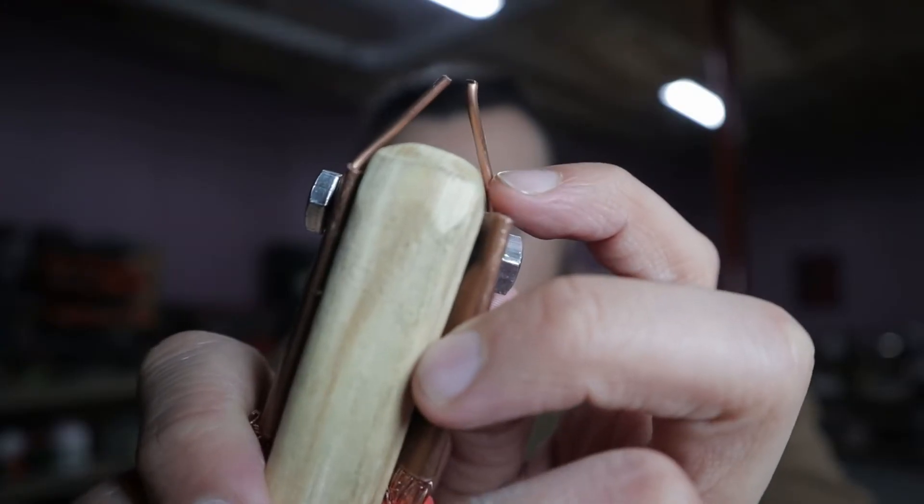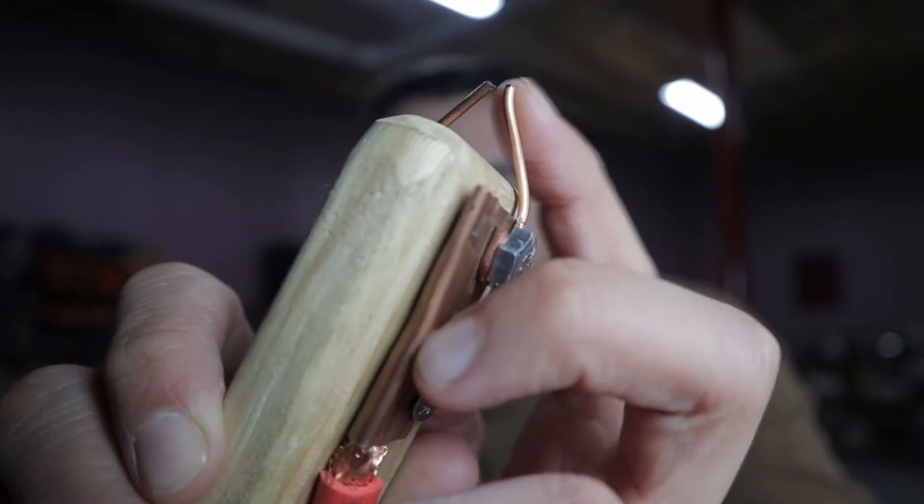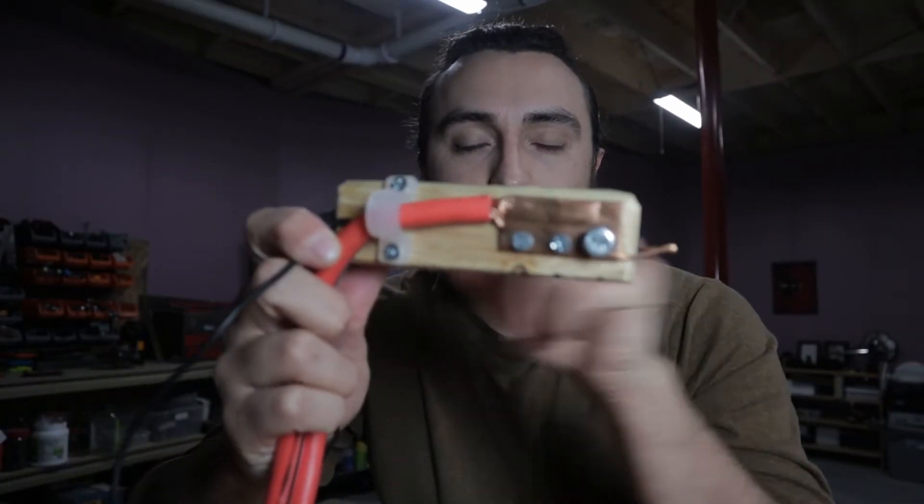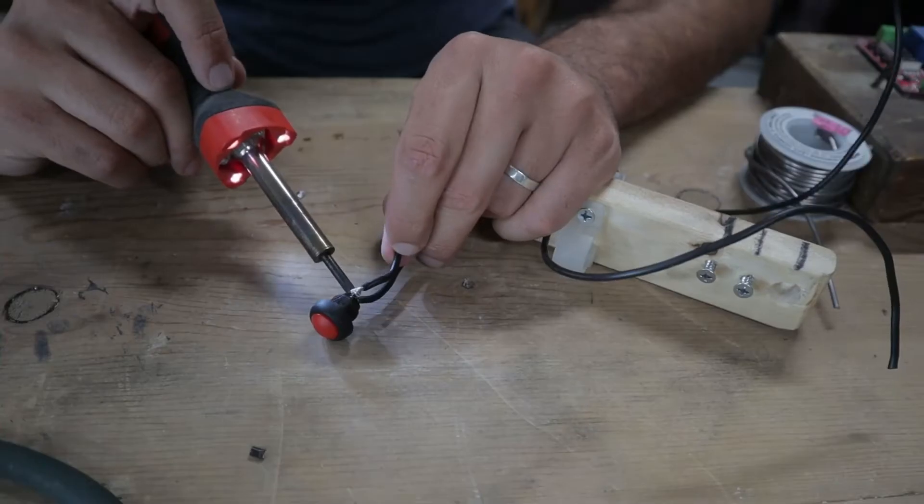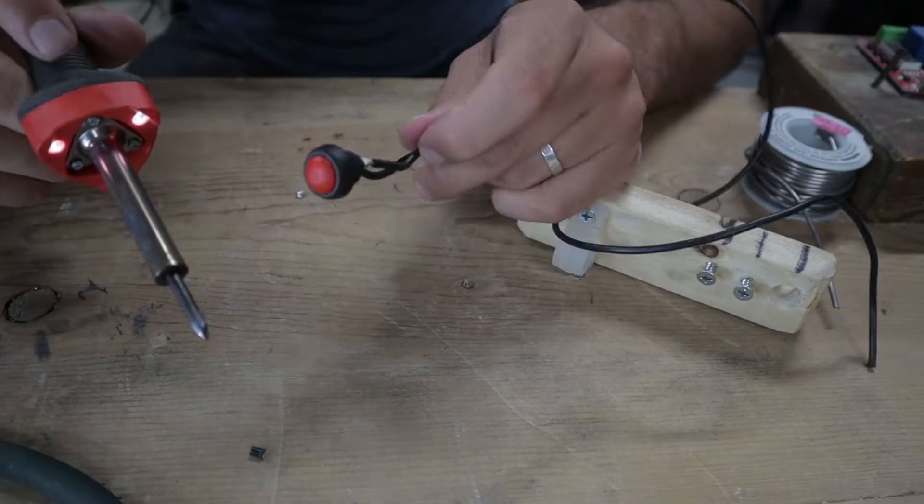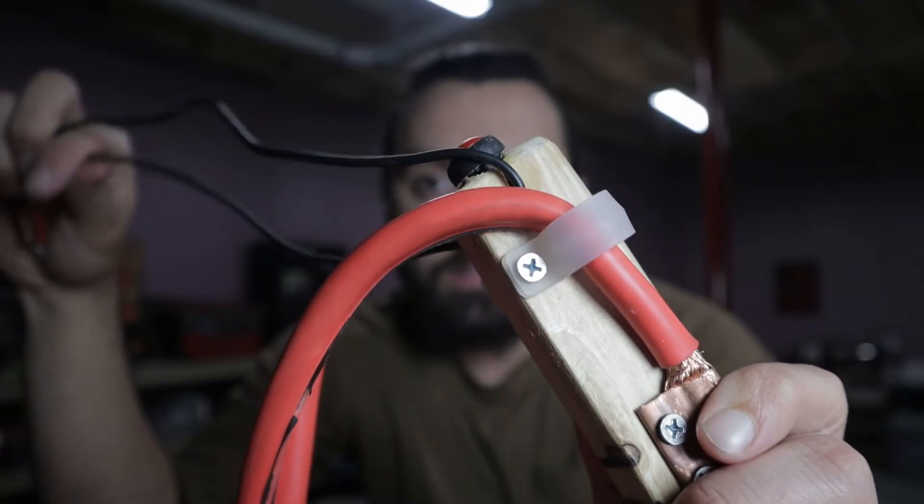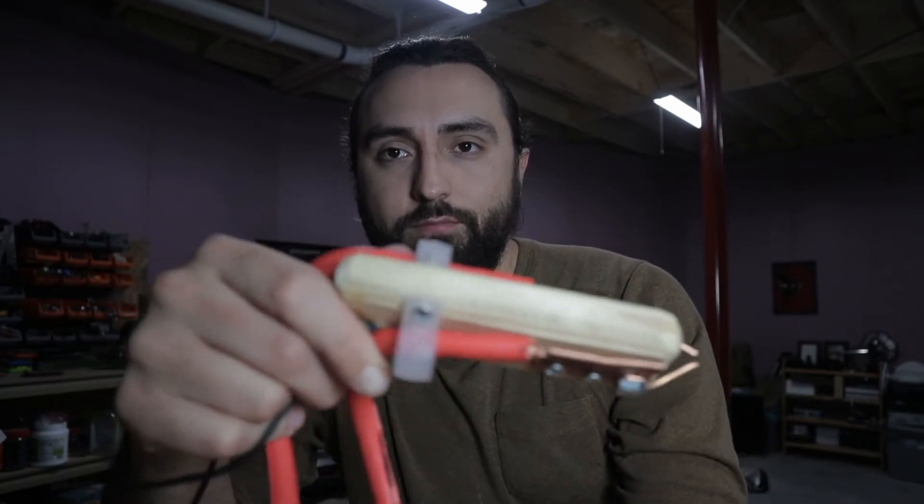So on these bolts, I just have some 14 gauge copper wire wound around them. And these act as the electrodes of the welder. Also, onto this piece of wood handle, just a piece of pine, I put a little trigger switch, just a little button switch. I have the wires for that trigger coming out the sides of the wood handle. And then I fixed everything together with just some plastic clips.